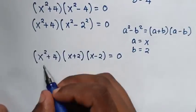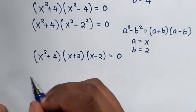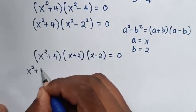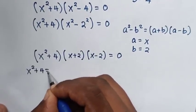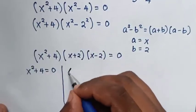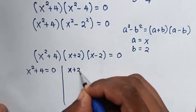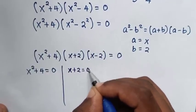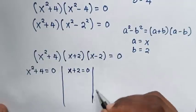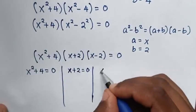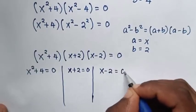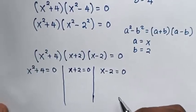We now have three cases: x² + 4 = 0, x + 2 = 0, and x - 2 = 0.